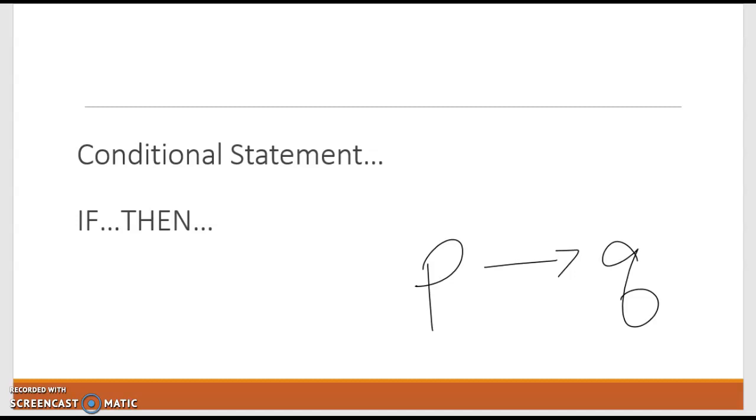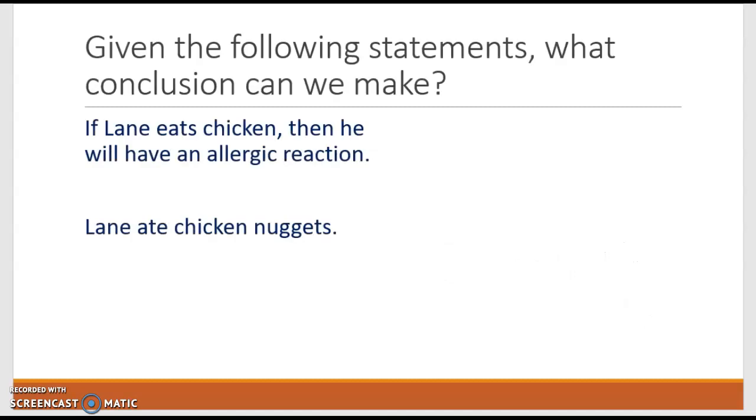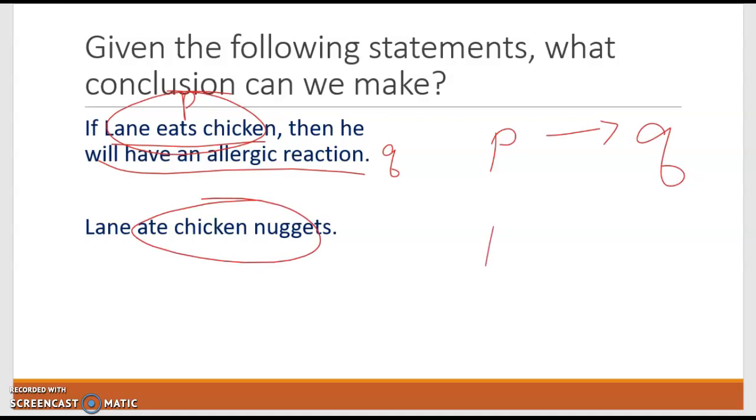So we can make some conclusions. Given the following statements, what conclusion can we make? First, if Lane eats chicken, then he will have an allergic reaction. Second statement, Lane ate chicken nuggets. Now, sometimes it helps if we think this through symbolically. So Lane eats chicken would be our statement P. We'll have an allergic reaction would be Q. So this would be if P, then Q, symbolically. Now, in the second statement, Lane ate chicken nuggets. Well, eating chicken is P. So this statement is just P.